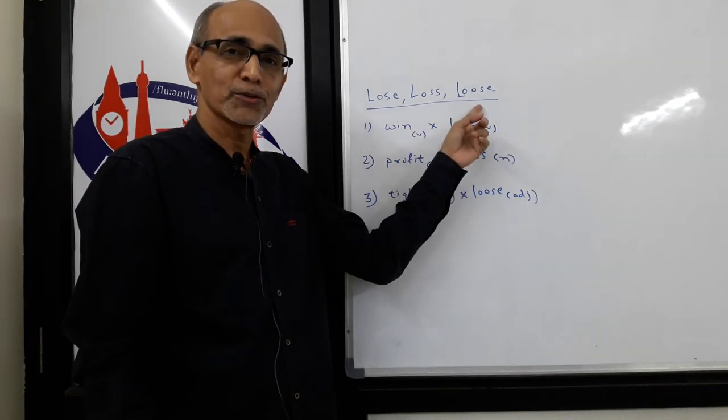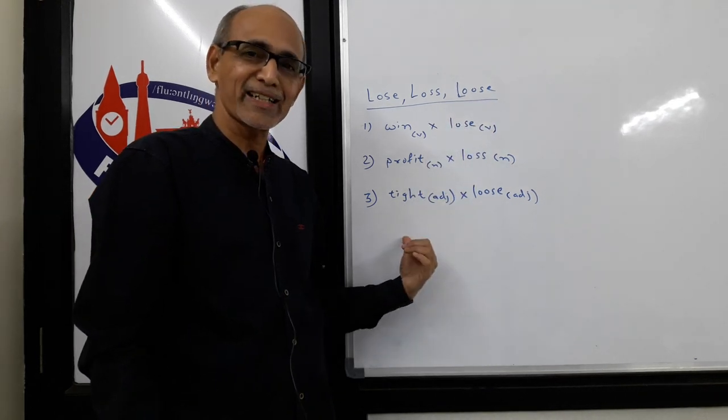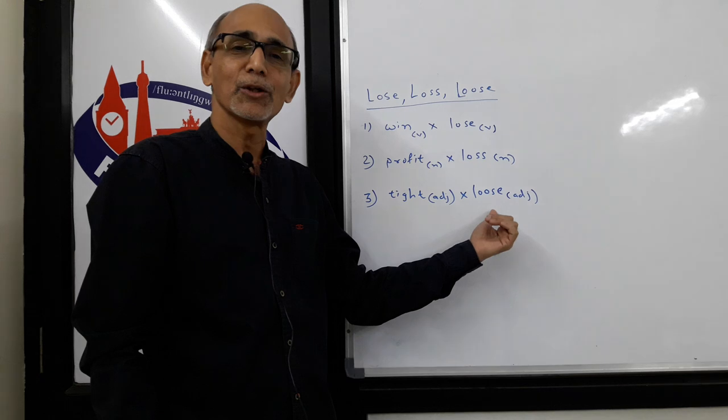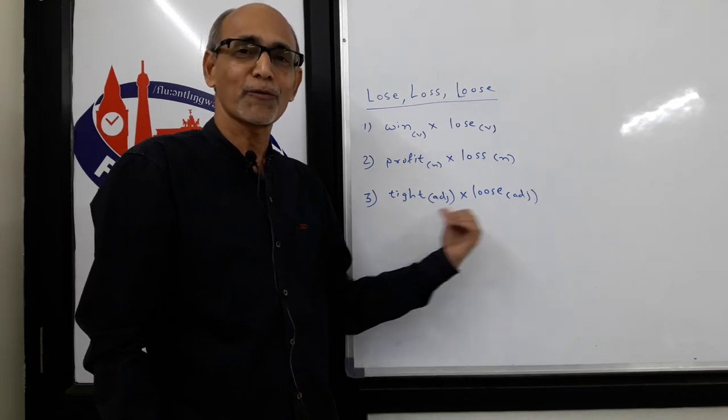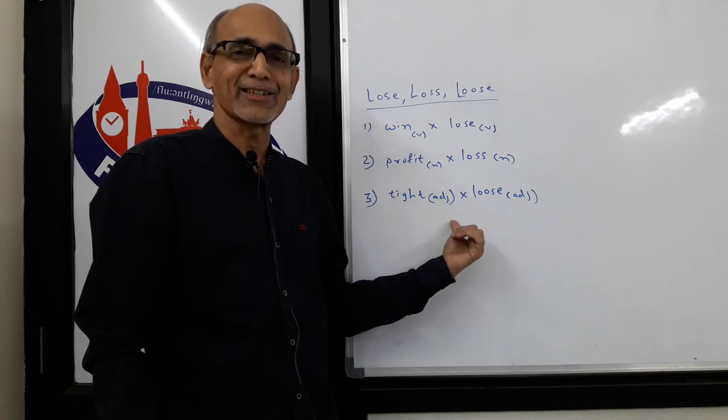And the third is loose. When you put on a dress, you might say it is tight or it might be loose. So the opposite of tight is loose. Tight and loose are adjectives.